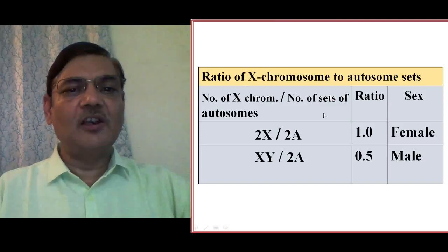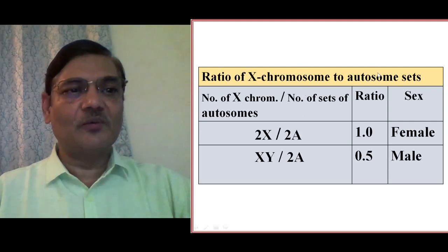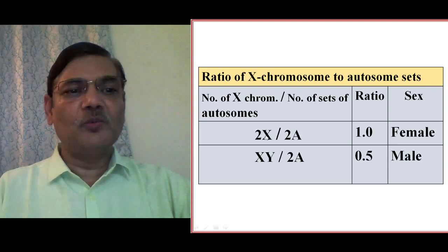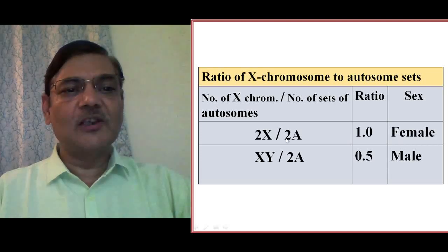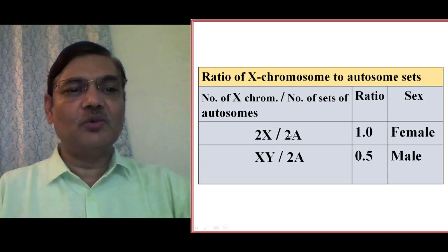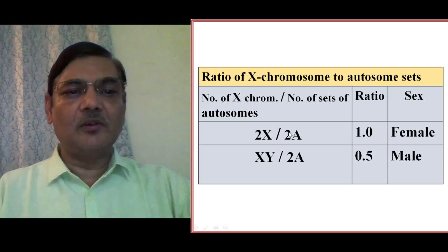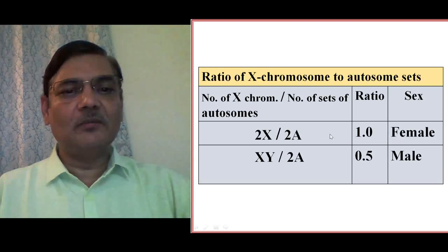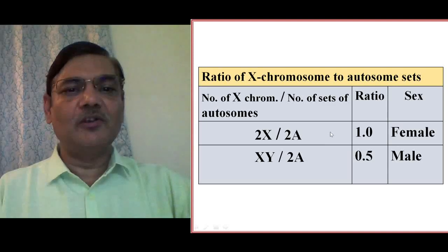Before explaining the cause of gynandromorph formation, we need to understand how sex is determined in Drosophila. In Drosophila, the ratio of X chromosomes to autosome sets determines sex. In the case of females, there are two X chromosomes and two sets of autosomes — one set from the paternal side and one from the maternal side — so the ratio is 2/2 = 1, and an individual with this value is female.